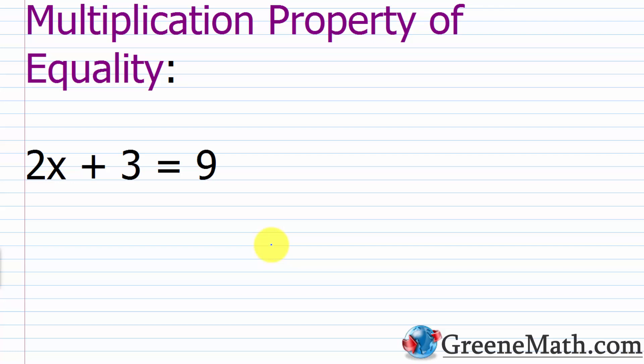The other property we want to know right away is the multiplication property of equality. This property tells us that we can multiply both sides of an equation by the same non-zero number and it will not affect the solution. Remember, if you multiply by 0 it becomes 0, so you can't use 0 — it has to be a non-zero value. For example, 2X plus 3 equals 9. We know this equation has a solution of X equals 3. If I multiply both sides by negative 2, will I still have X equals 3 as the solution? Let's try it out.